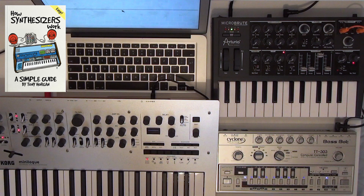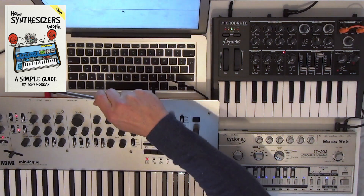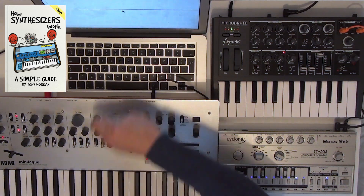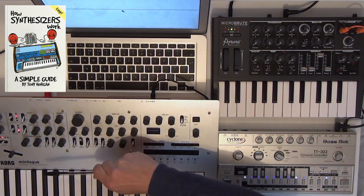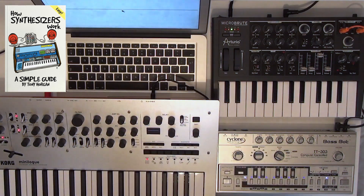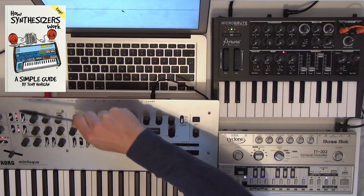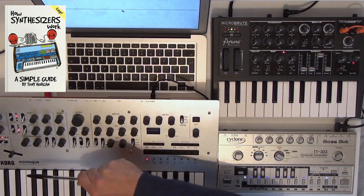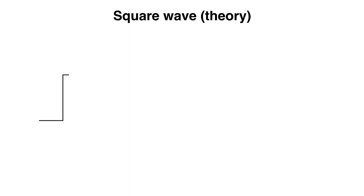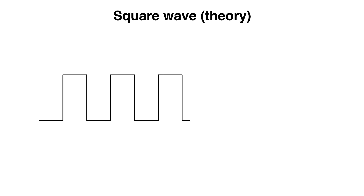If the oscillator steps up and down suddenly, then it creates what we call a square wave, which would look a bit like this. In theory, it would look like this, and it would sound like this.